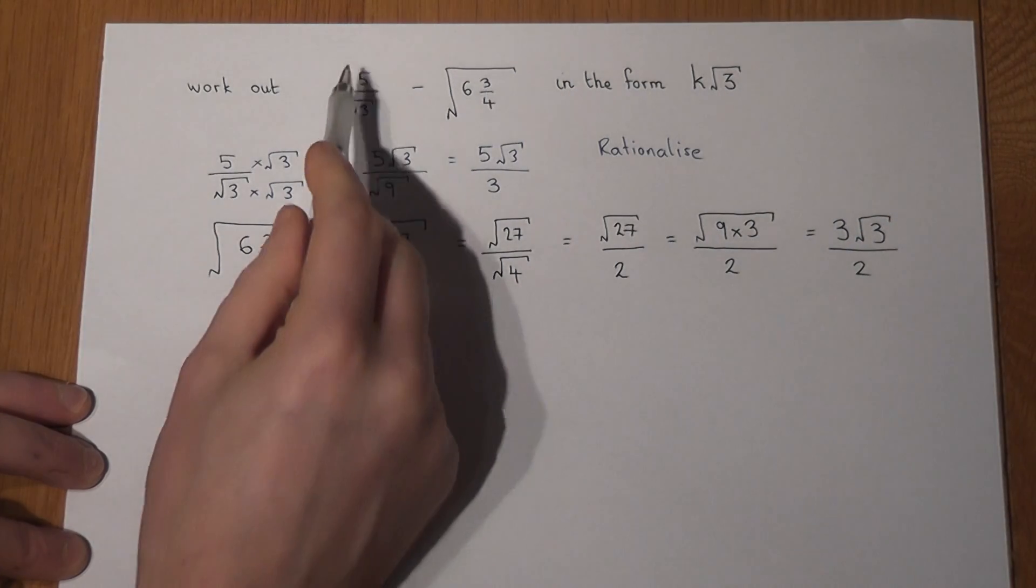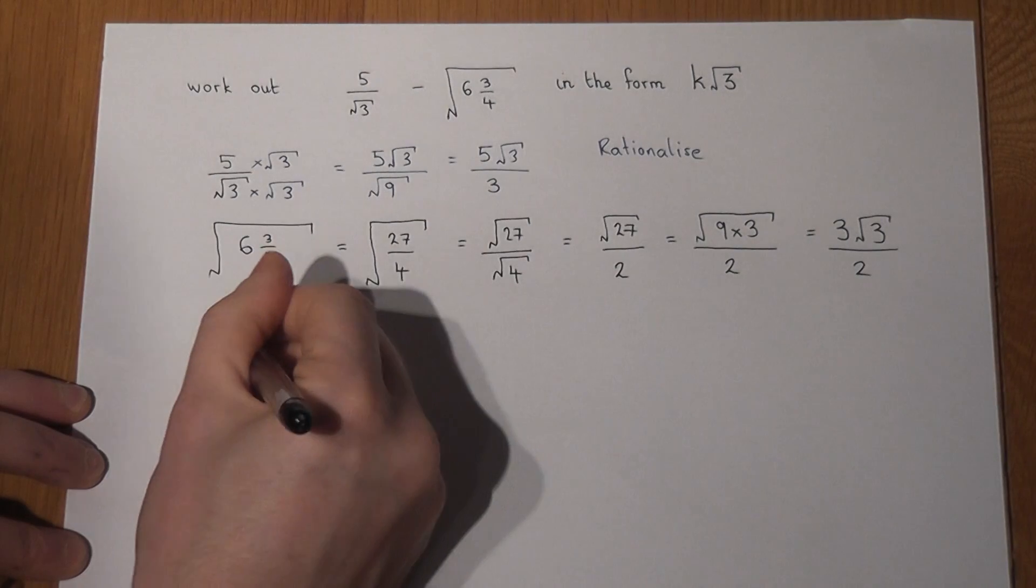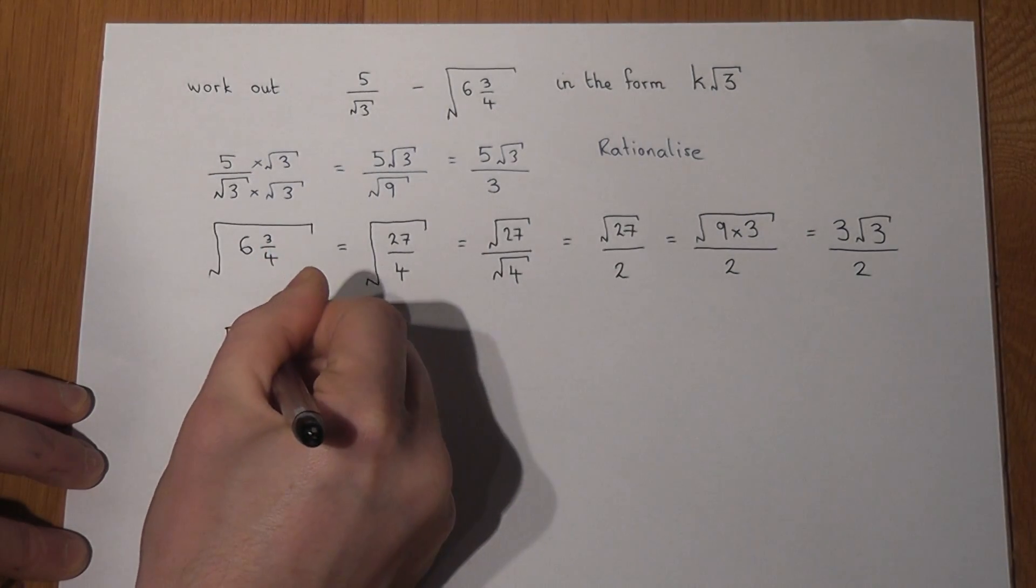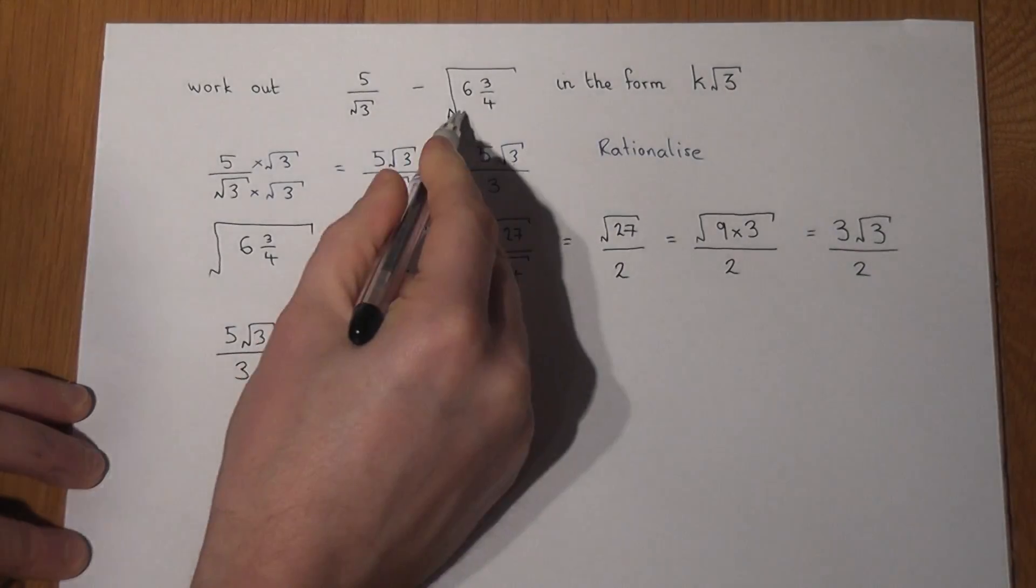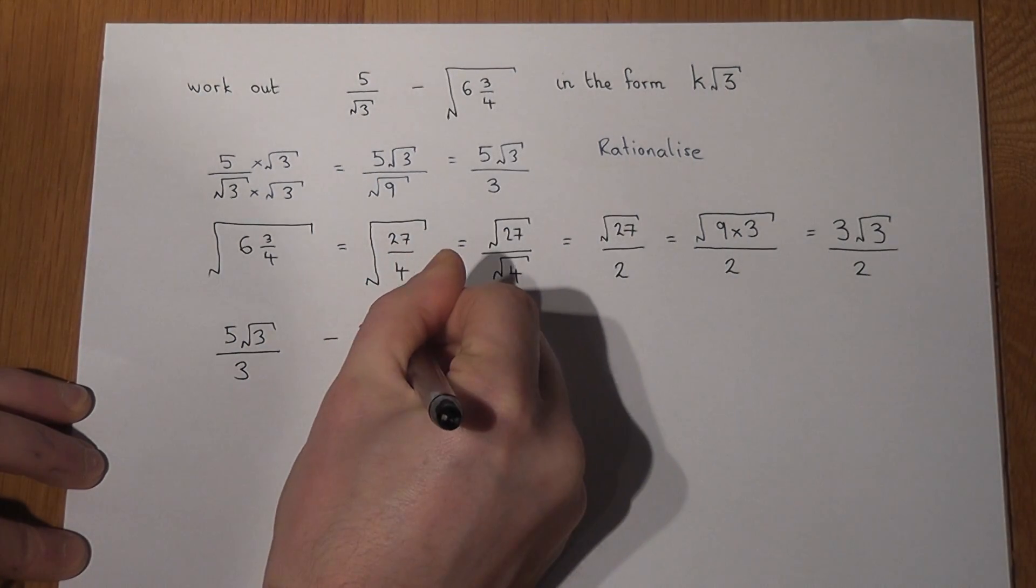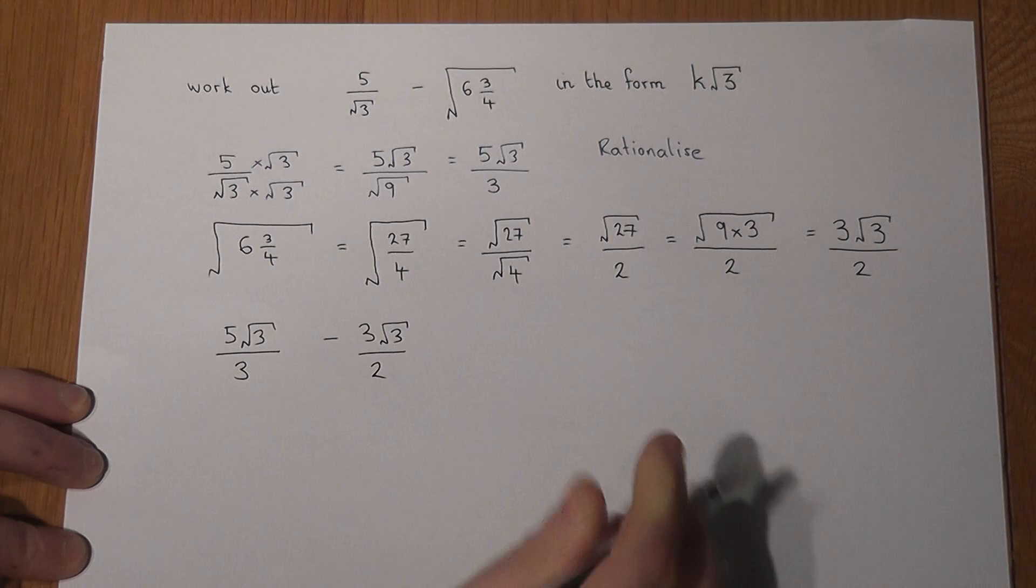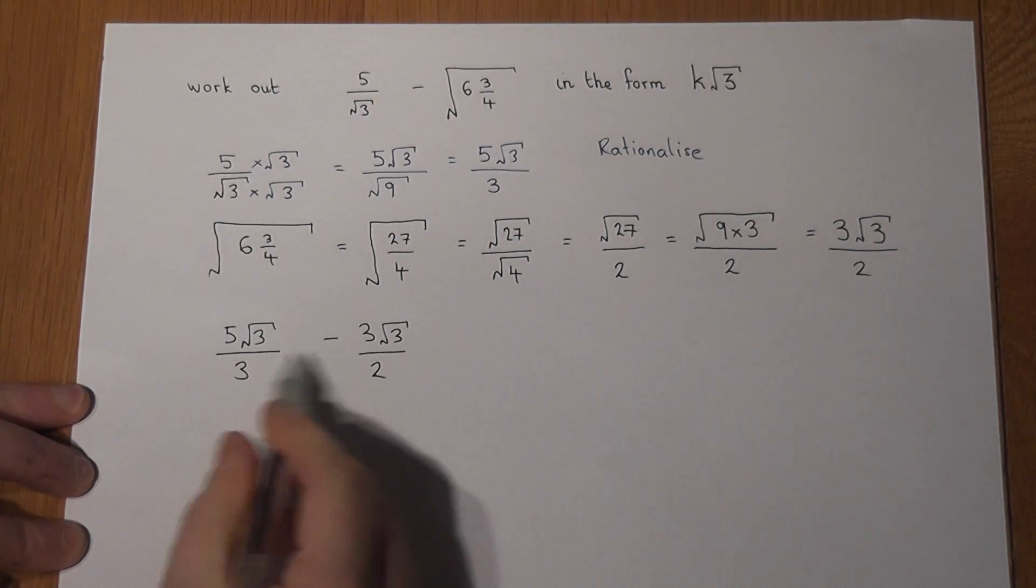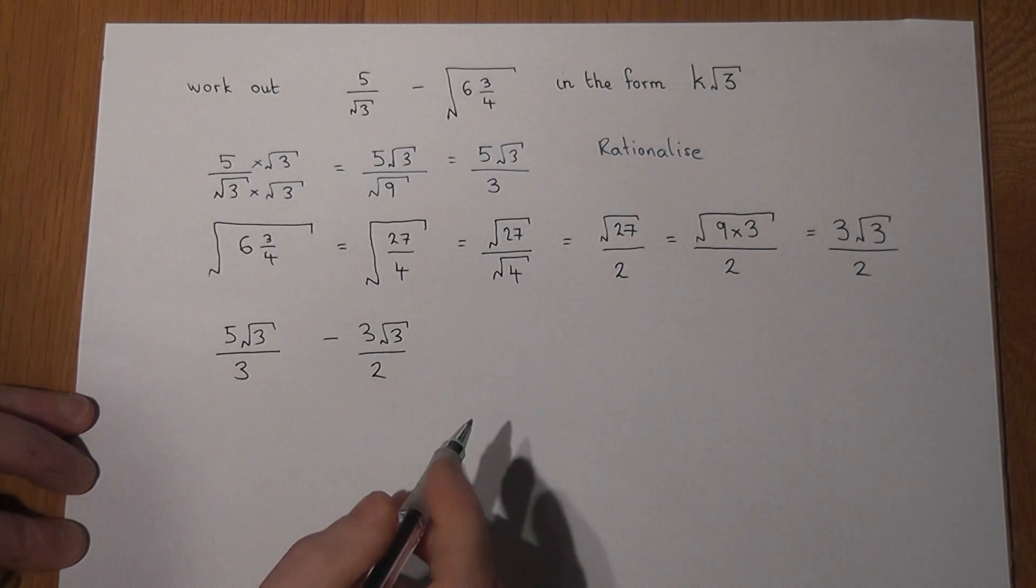So I've written the first bit as 5 root 3 over 3 and the second bit as 3 root 3 over 2. And the final challenge is to basically subtract these two fractions.